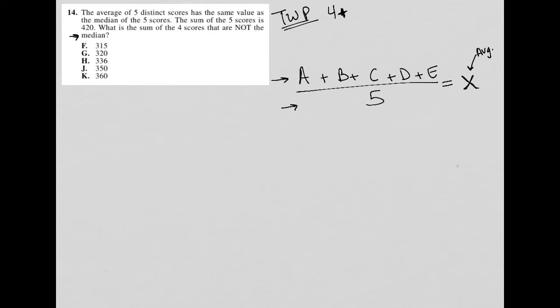It then tells me that the average is equal to the median of the five scores. So the median, if I have the scores arranged in ascending order, that means that c, the value of c would be the median. And based upon what this first sentence is telling me, x is equal to c.